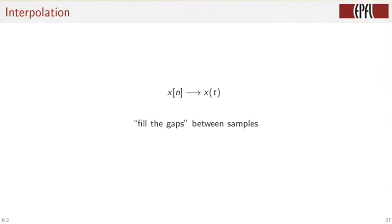The interpolation question is very elementary. You have a sequence xn, you want to generate x of t, and you would like to fill the gaps between the samples. How should we best do this?